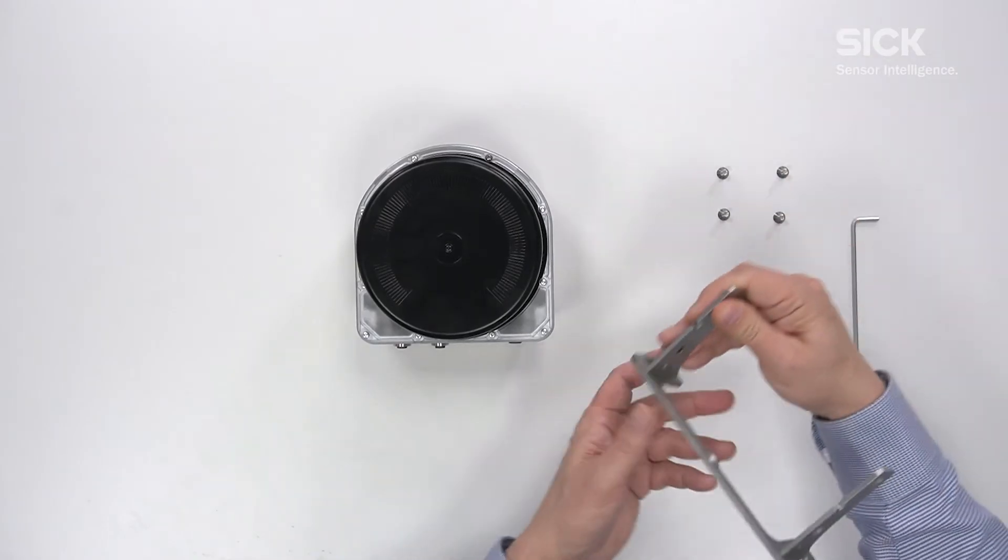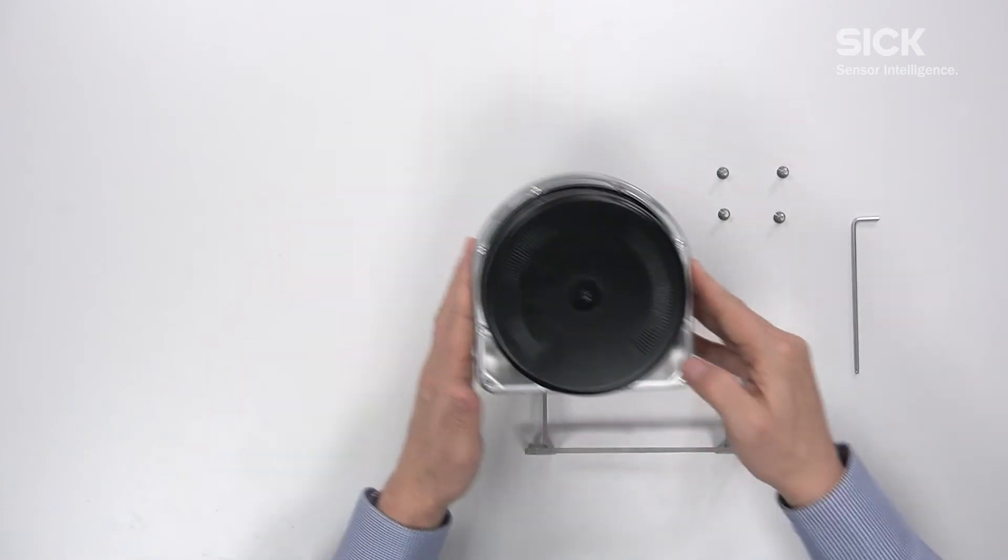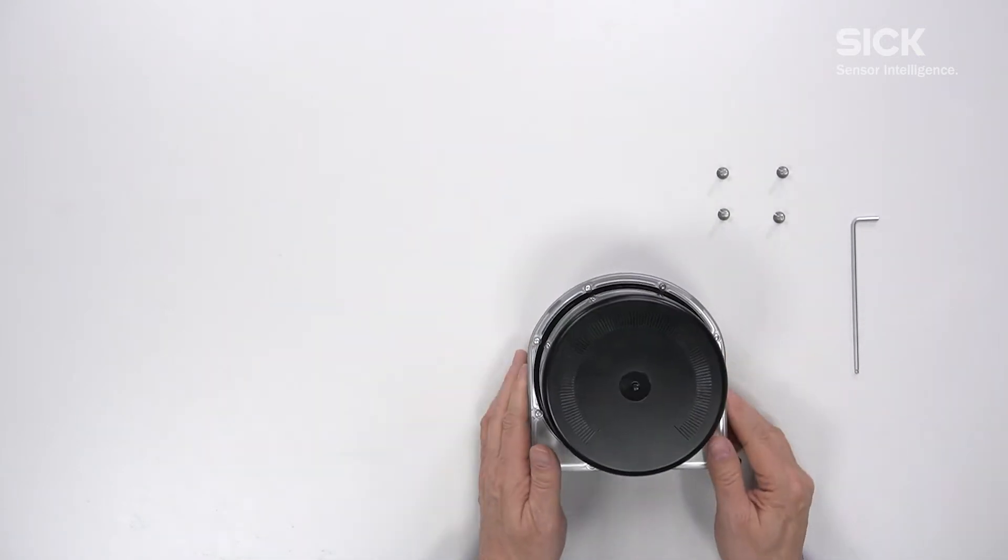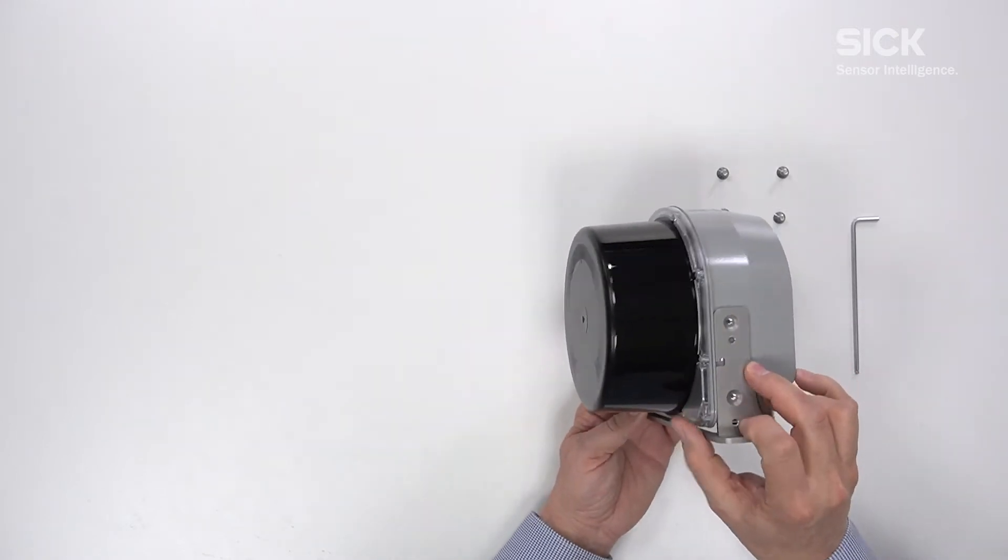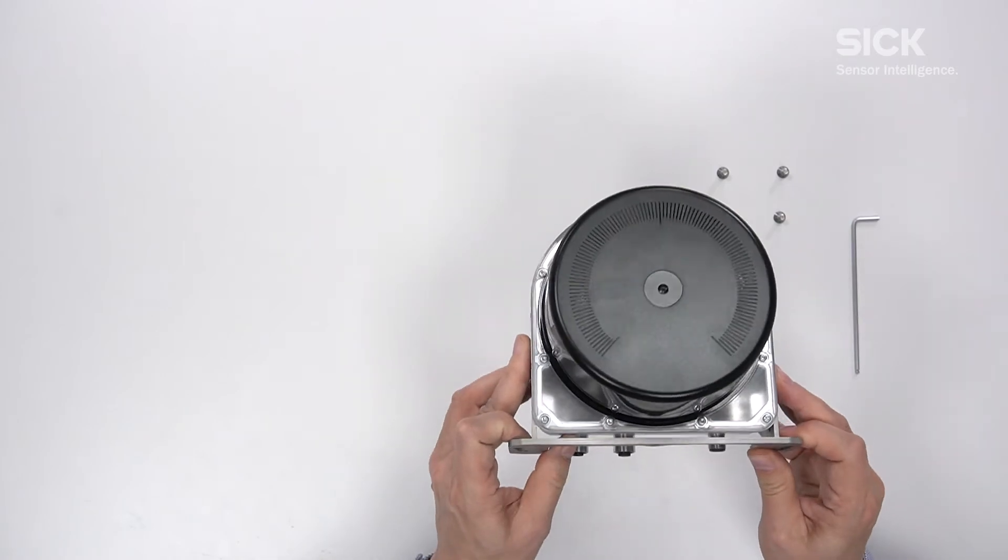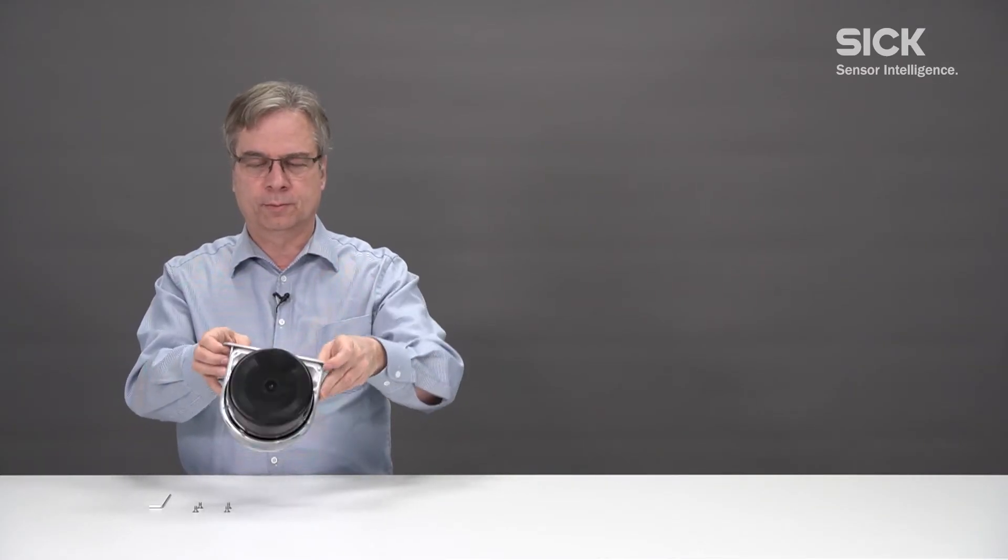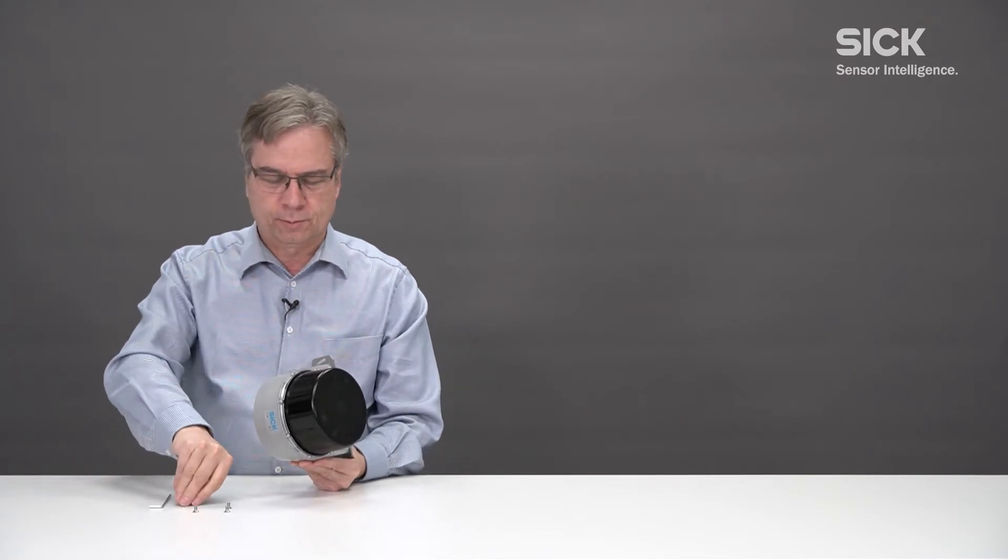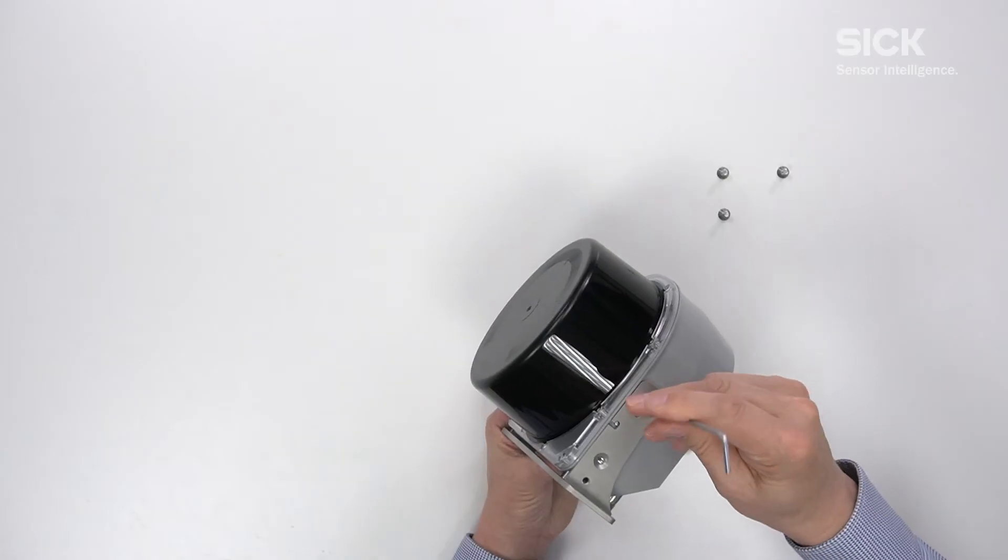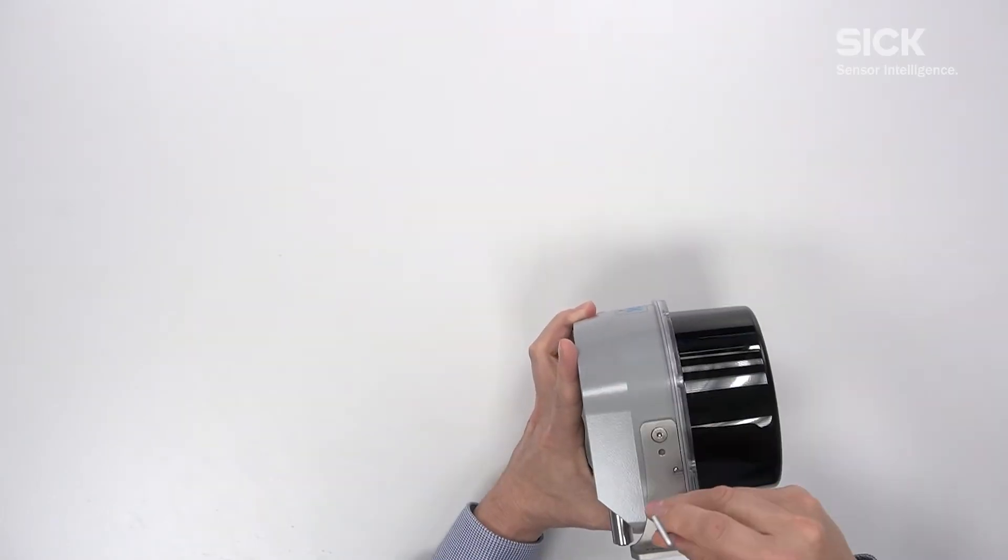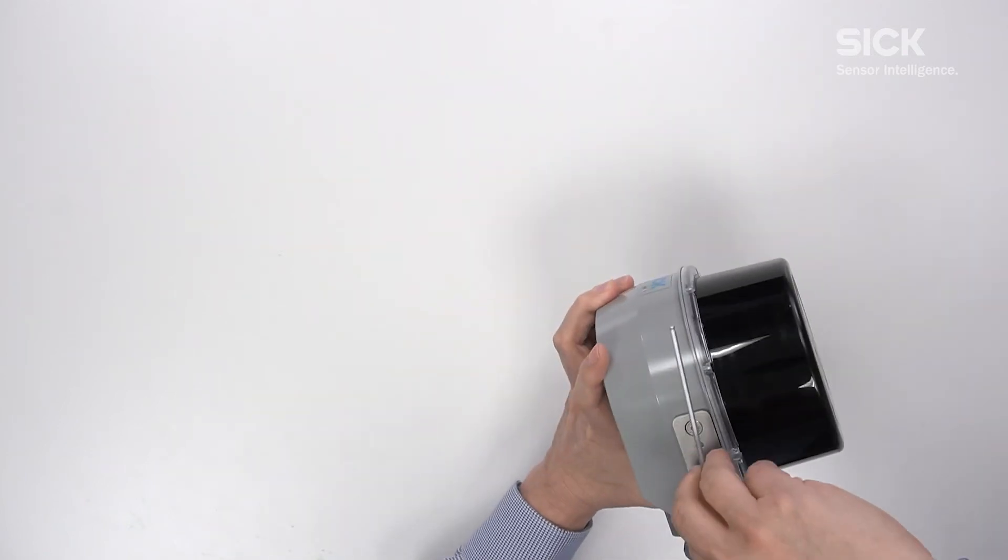For example, if you have this bracket already mounted to a wall you can slide in the mounting pin and you see it's already fixed. The same as for the downward mounting. And then you take the screws and finally tighten them crossover.